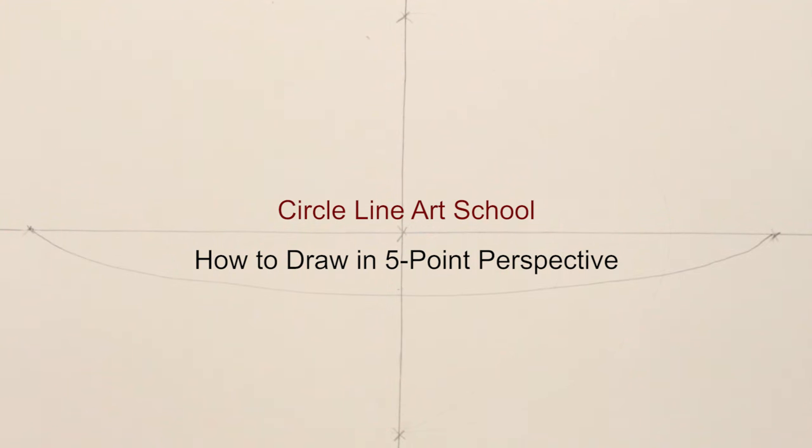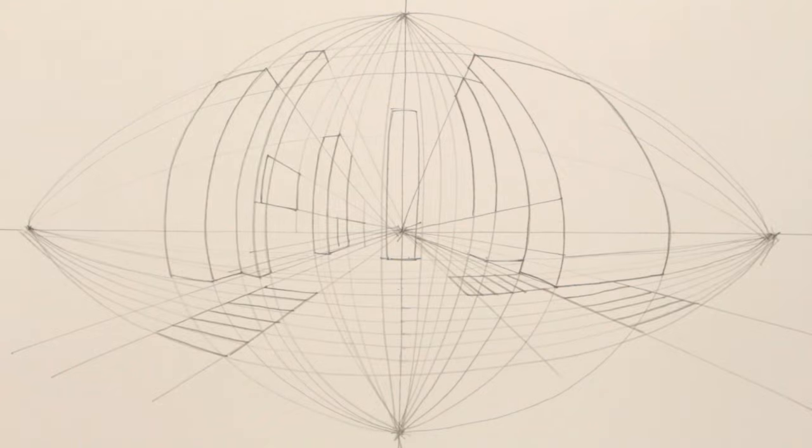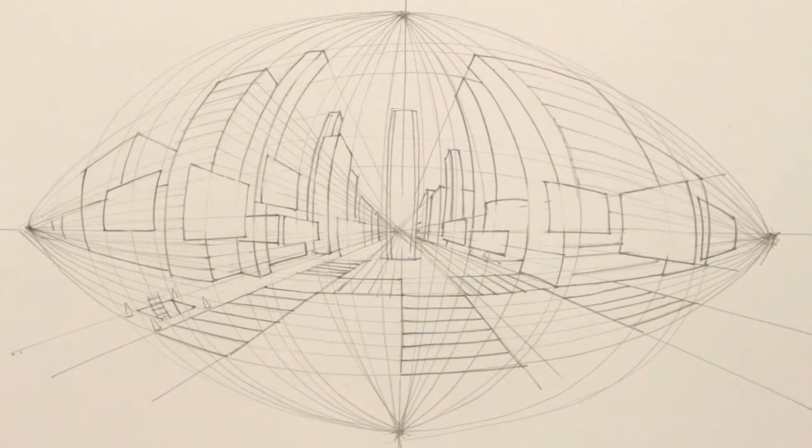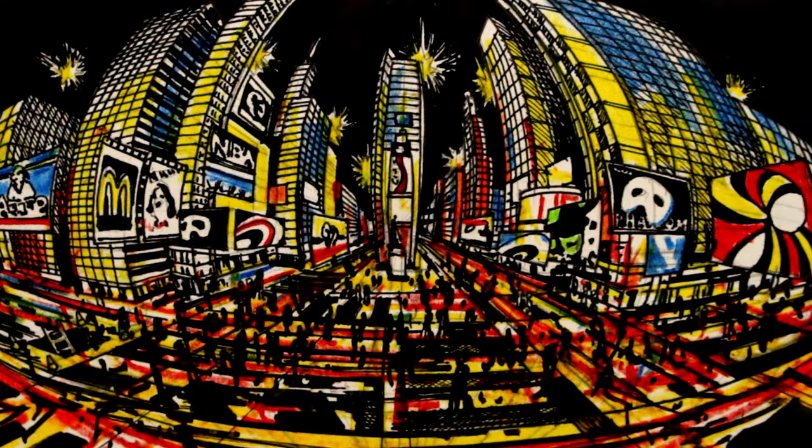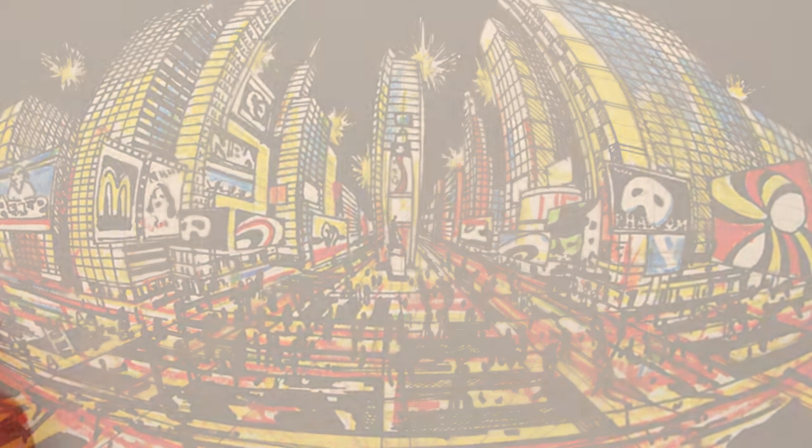Hello, my name is Tom McPherson and welcome to my new Circle Line Art School video, how to draw in five-point perspective. This is a drawing based on Times Square in New York. I will add some color with some pencils and pens towards the end of the drawing.